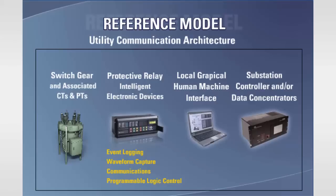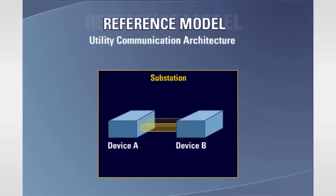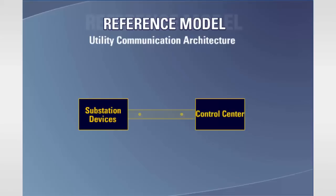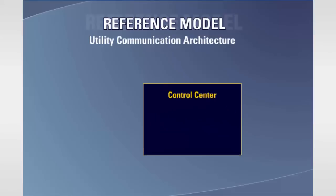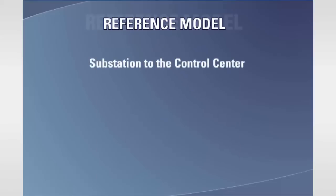Now let's take a closer look at the communications. The communications links vary greatly but fall into three major categories: communication between devices within the substation, communications between devices within the substation and the central control center, and communications between clients at the control center. The IEC 61850 protocol standard divides the communication infrastructure into three areas: the substation to the control center, the station bus, and the process bus.